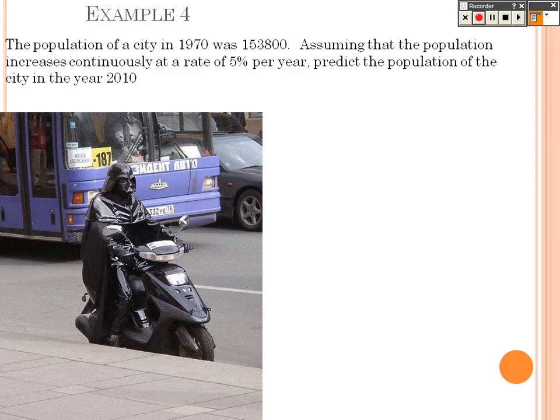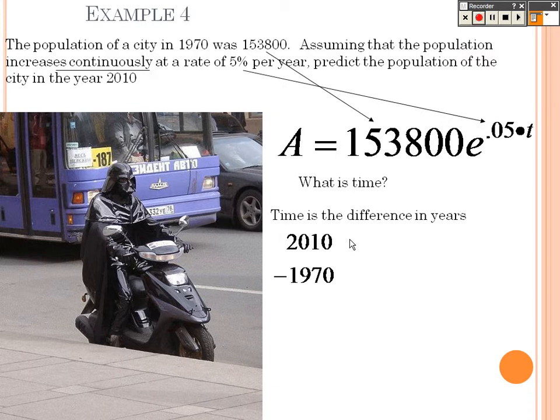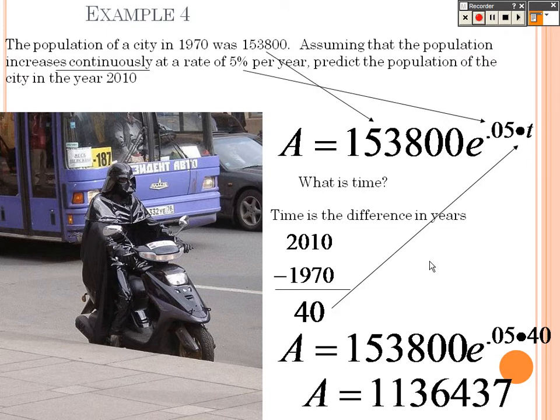Example 4. Population of a city in 1970 was 153,800. Assuming that the population increases continuously at a rate of 5% per year, predict the population in 2010. This is the population that it started with in 1970. I know the rate is 0.05 in 2010, so that's why I'm doing the number of years difference, which 2010 from 1970 is 40 years. So I'm going to plug a 40 in there. And we figure out that the population should be 1,136,437.